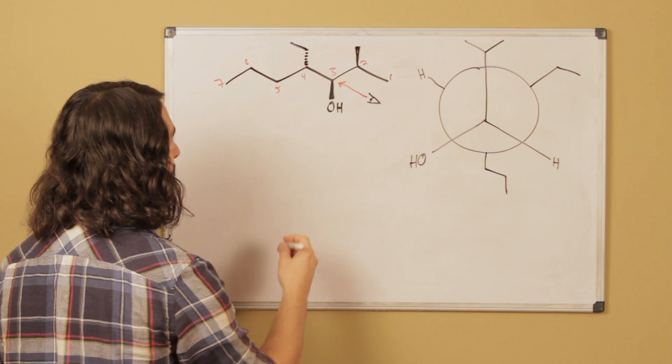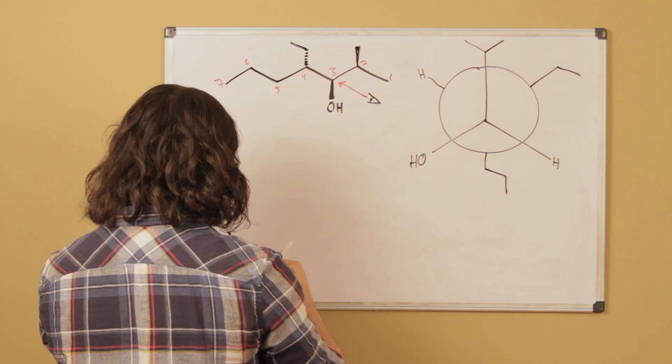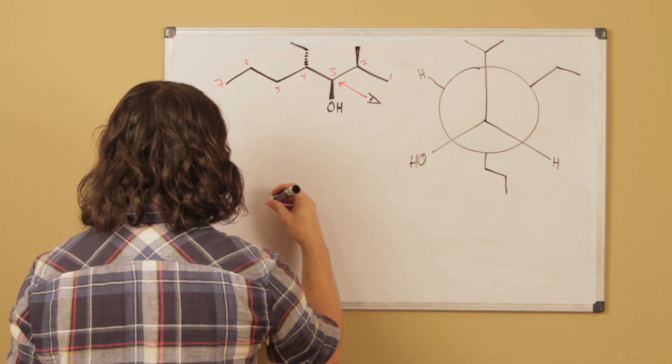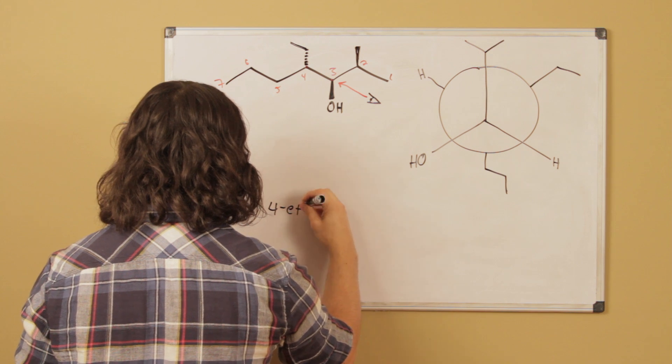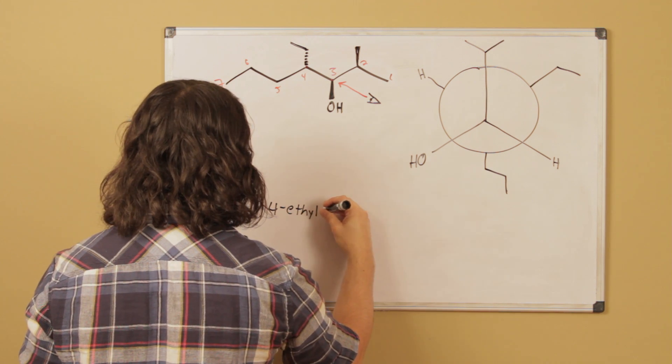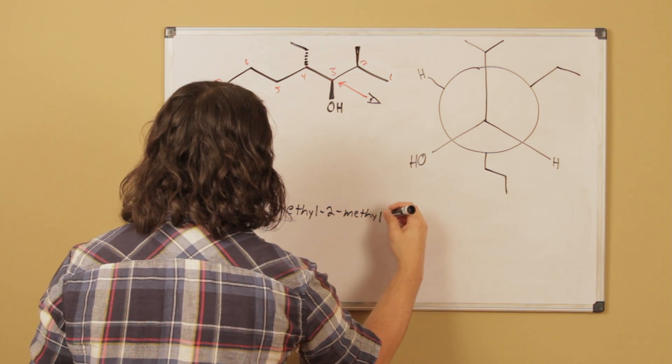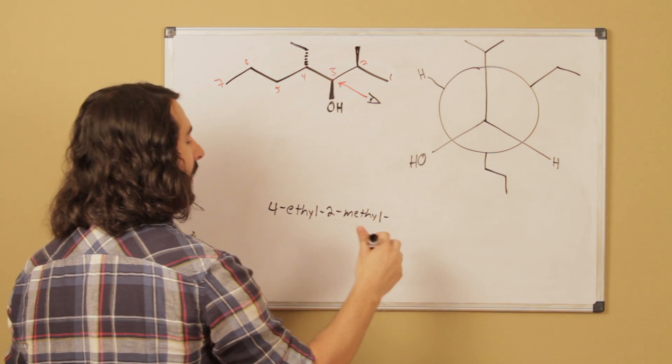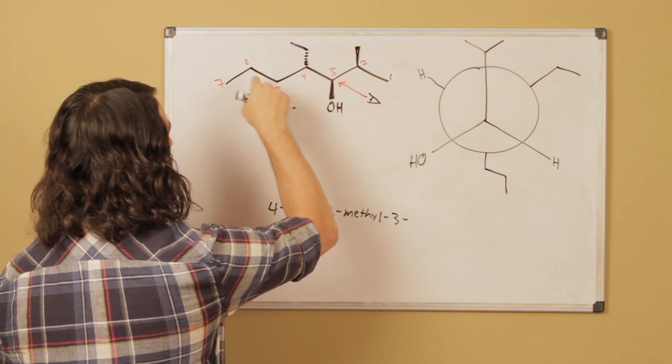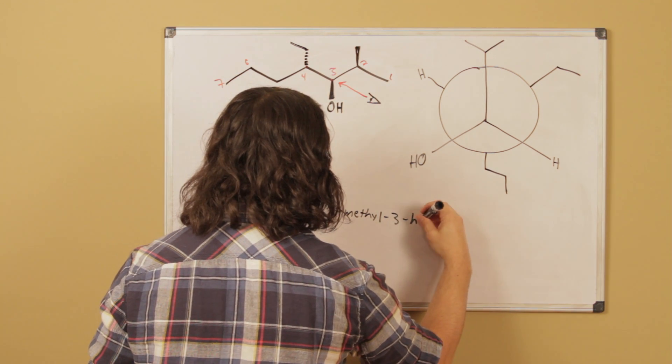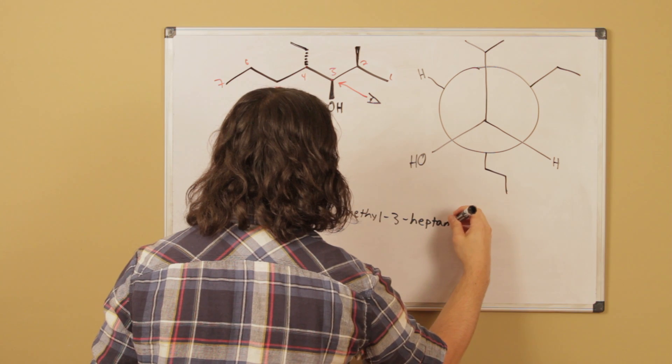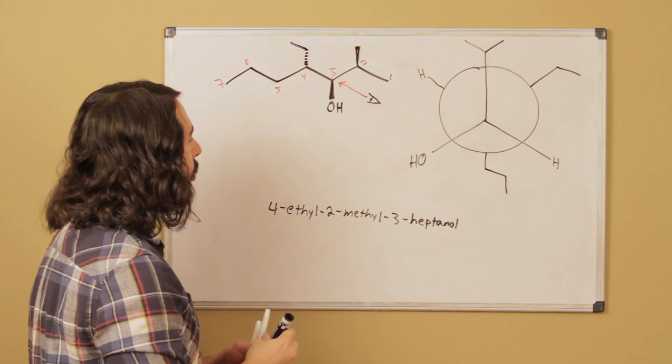Let's go ahead and list the majority of this molecule. We know that this is going to be 4-ethyl, 2-methyl. And then the hydroxyl group is occurring on carbon 3. And this is a 7-carbon parent chain, so that is a heptanol. So that's the majority of it.